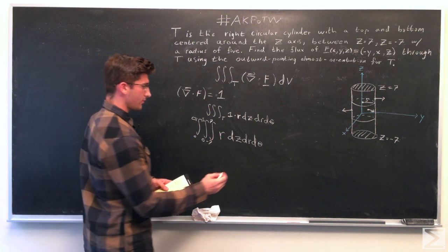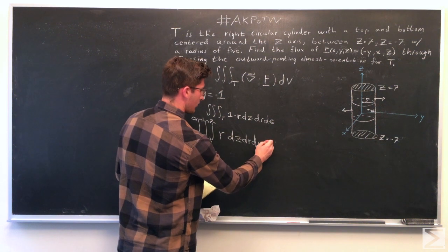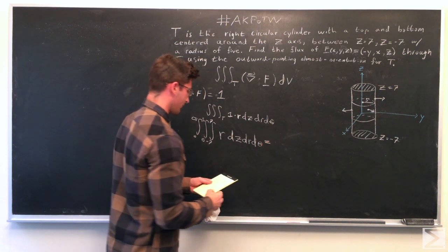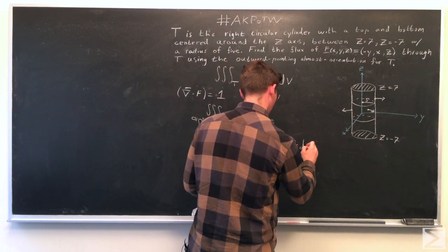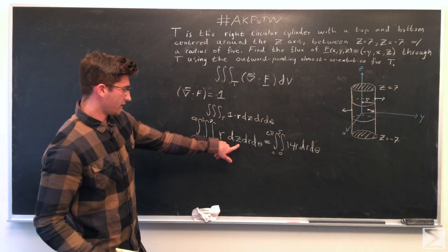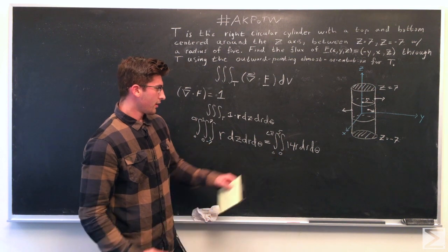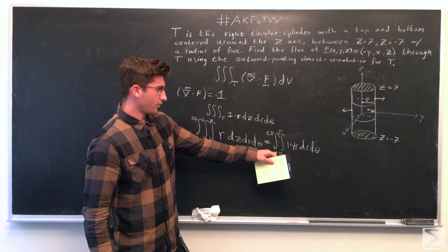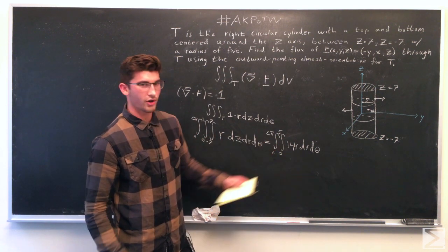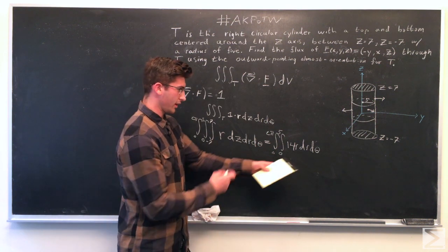So let's go ahead and do the first integration. When we do our first inside integration, we're going to end up with a second double integral. So from 0 to 2 pi, just like before, and from 0 to 5 of 14r dr d theta.